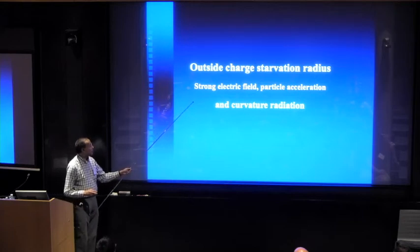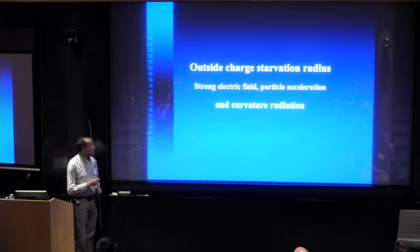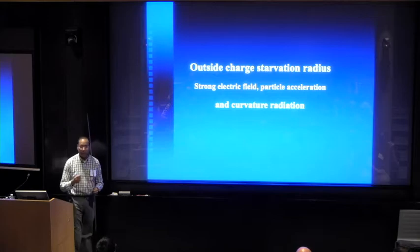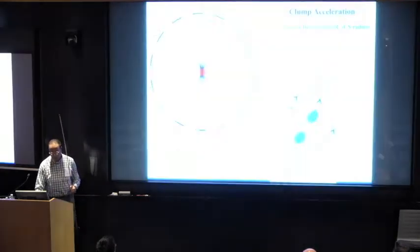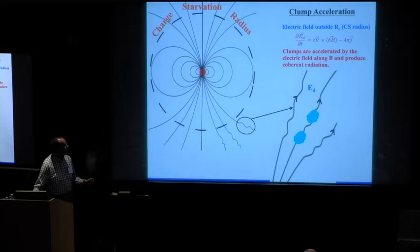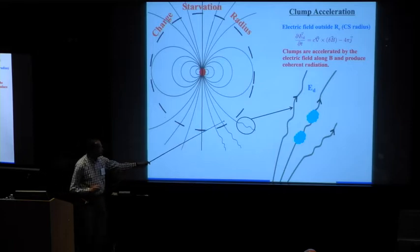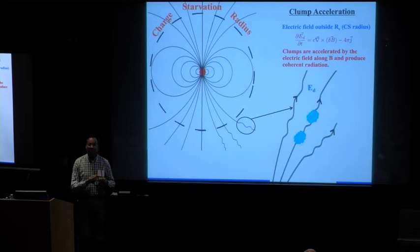So outside of the charge starvation radius, what we have is a strong electric field and particle acceleration and curvature radiation. And the way it works is this, that Alfvén waves now going outside of the charge starvation radius...